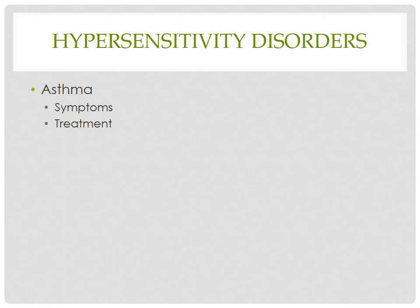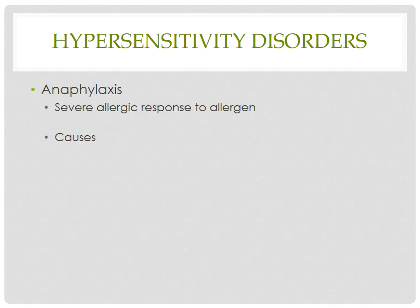Treatment includes avoidance of the causative agent, as well as introduction of bronchodilators and mucolytics. There is no cure, but the disease can be controlled very well if the patient is compliant with the medication regimen and avoids allergens. Smoking is one of the worst things for respiratory problems. Asthma is a type one hypersensitivity reaction.